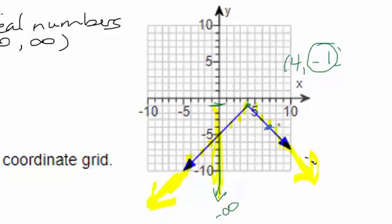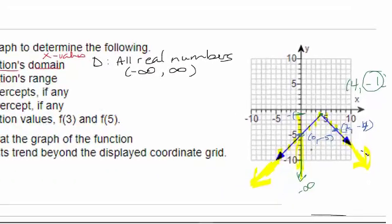Each one of those y-values exists in one of the points on this function. For example, here's the point, looks like 7, negative 4. So the negative 4 is one of the y-values between negative infinity and negative 1. Here's the point 0, negative 5. Negative 5 is another one of the numbers between negative infinity and negative 1, but we can't list them all.